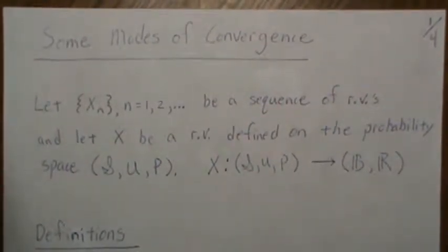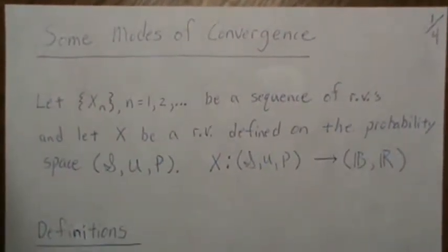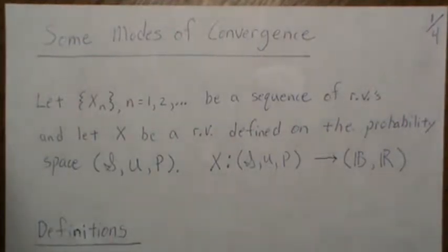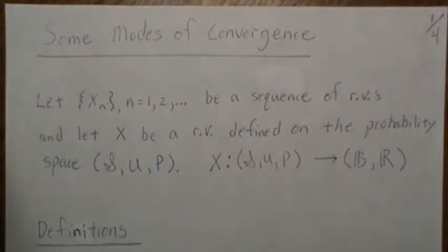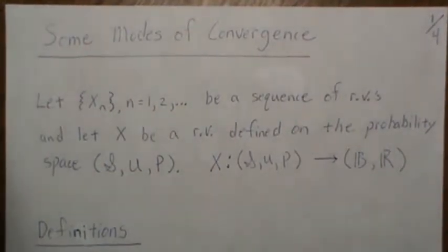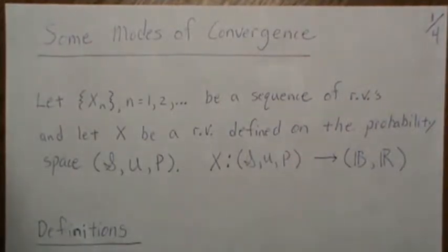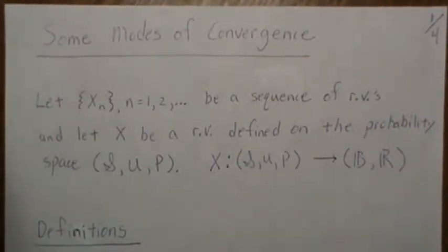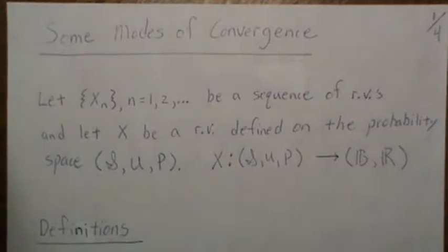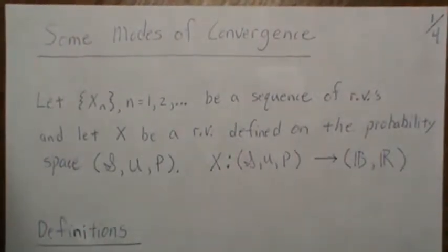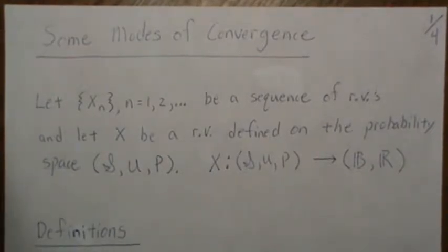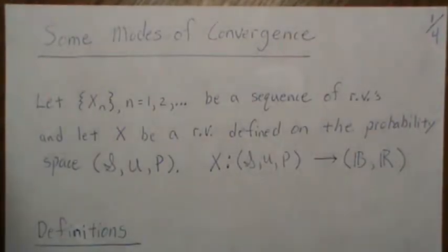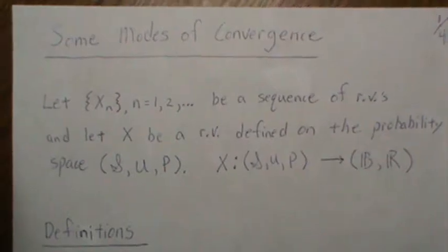Hello, in this video we're going to look at modes of convergence. It's going to be the first video in a little mini series that I'm calling 'Basic Limit Theorems.' Here we're going to look at four different types of convergence. It's basically going to give the definitions of each of them, and then in the following videos we will make use of them, give examples, prove them, and so on.